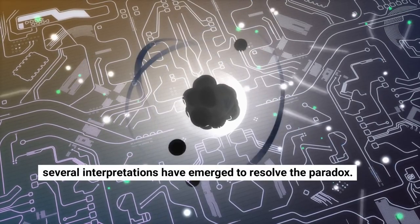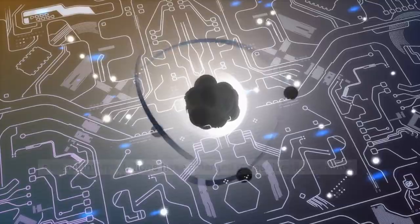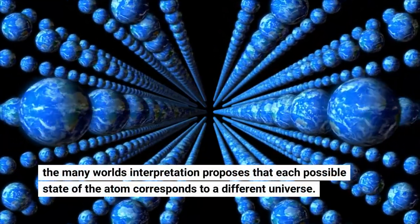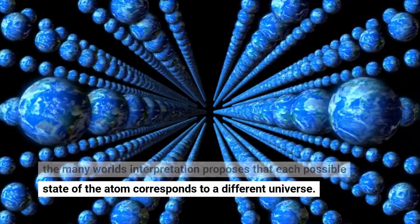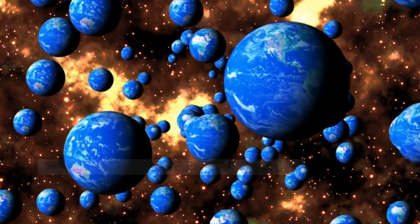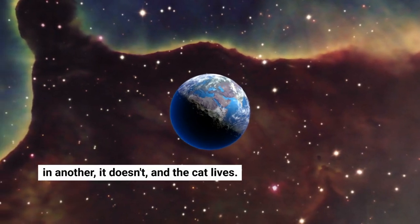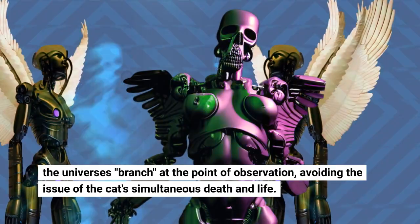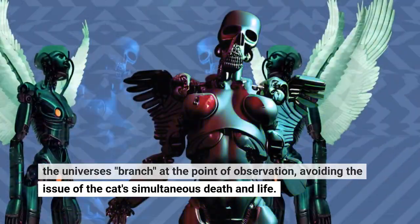Several interpretations have emerged to resolve the paradox. The many worlds interpretation proposes that each possible state of the atom corresponds to a different universe. In one universe, the atom decays, and the cat dies. In another, it doesn't, and the cat lives. The universe is branched at the point of observation, avoiding the issue of the cat's simultaneous death and life.